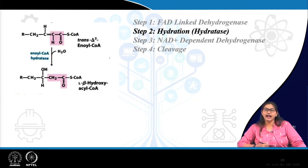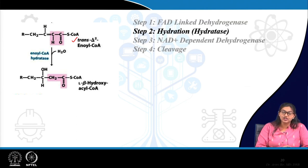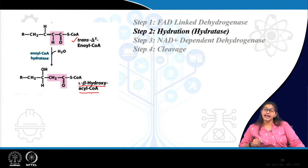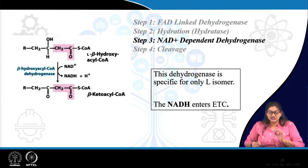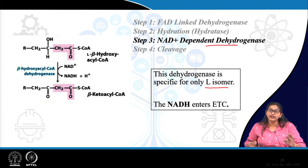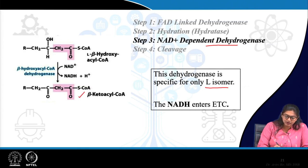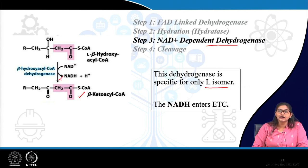Next is hydration by hydratase. This enzyme is specific for the trans bond, so the trans configuration is important for specificity of hydratase. After addition of one molecule of water, beta-hydroxyacyl coenzyme A is formed as the L-stereoisomer. This L-stereoisomer is then acted upon by NAD-dependent dehydrogenase, which is specific for the L-isomer of beta-hydroxyacyl CoA, and what is formed is beta-ketoacyl coenzyme A, with another electron transferred to NAD forming NADH.